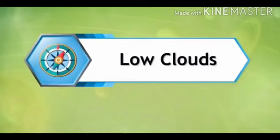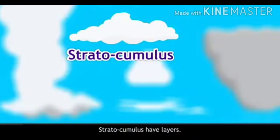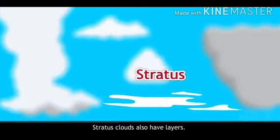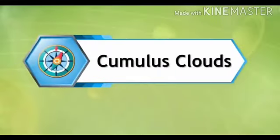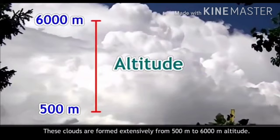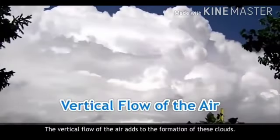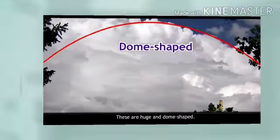Low clouds consist of five types. Stratocumulus clouds have layers; their color is white to earthy, and round clusters of clouds can be seen here. Stratus clouds also have layers — they are ash-colored and their base is uniform. Nimbostratus clouds have thick layers; they are grayish in color and cause continuous rainfall and even snowfall in some areas.